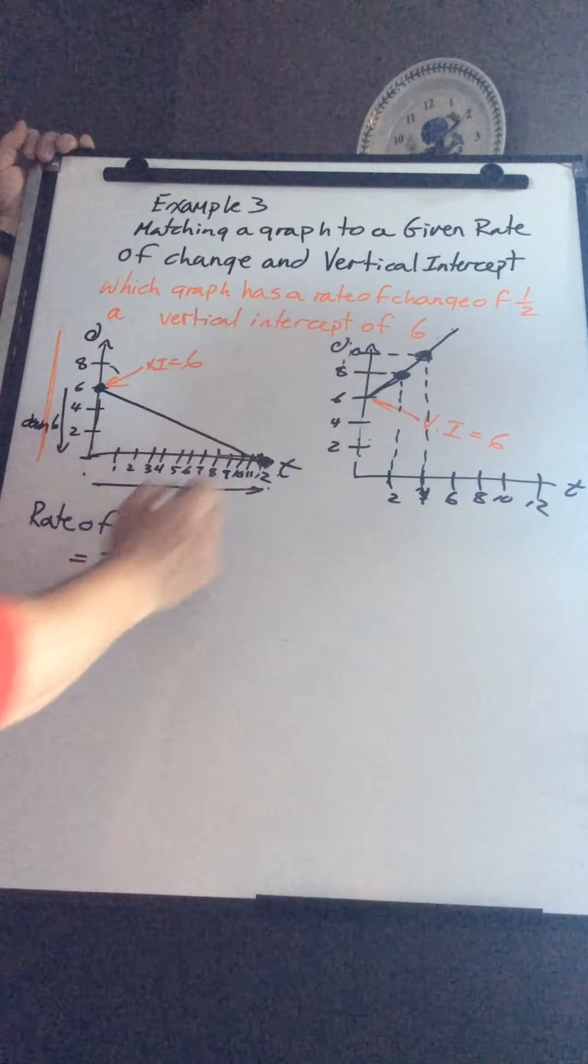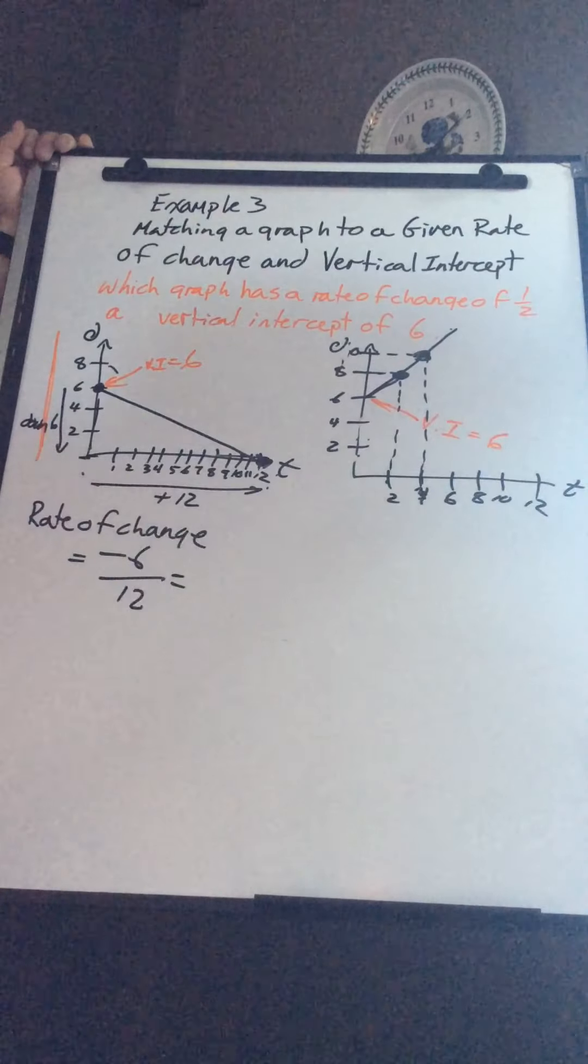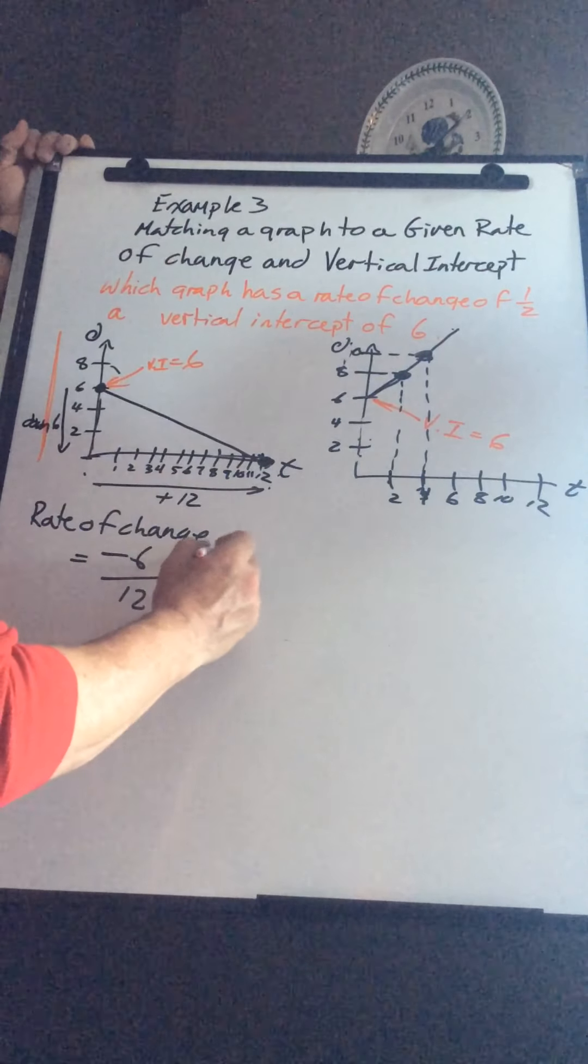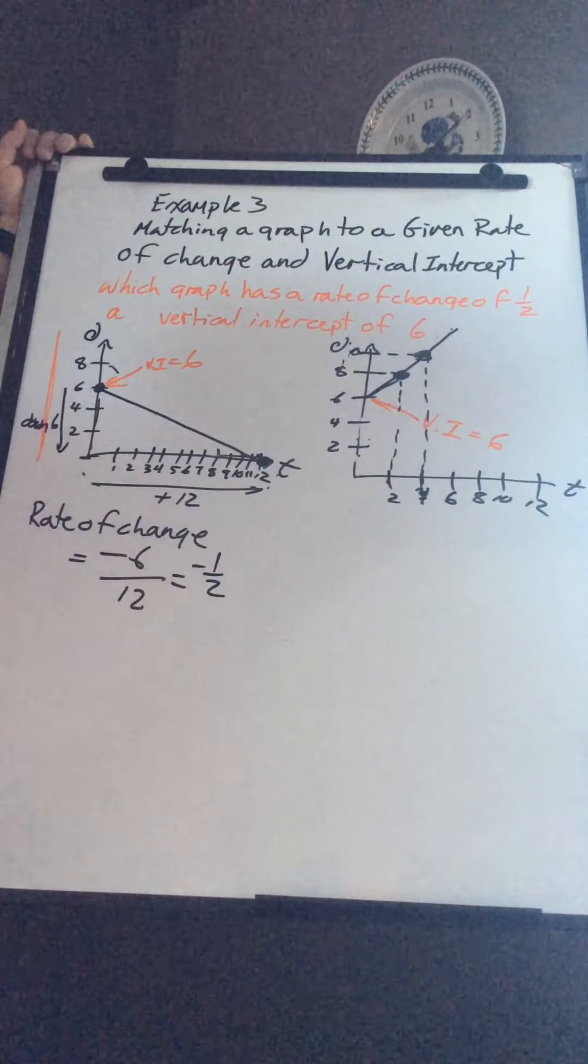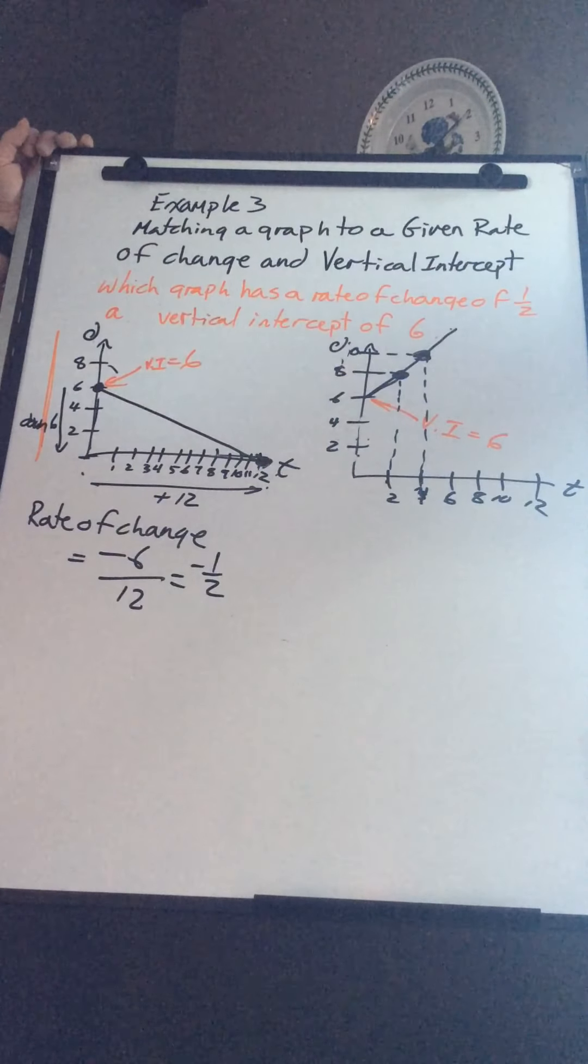So down six, over 12. Rate of change, always simplify. So that gives me negative one-half, right? So that's my rate of change.